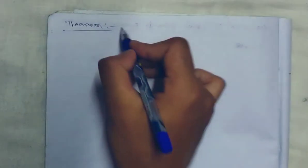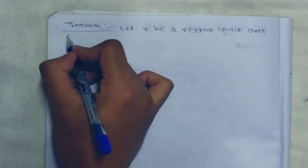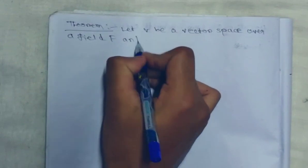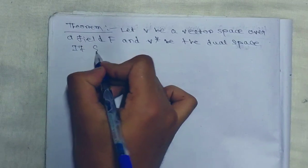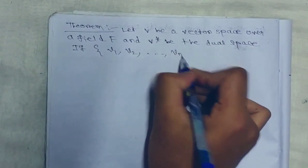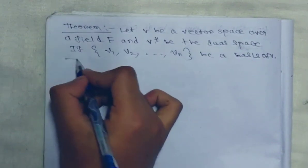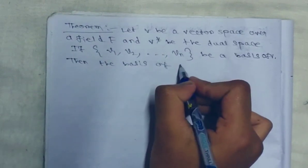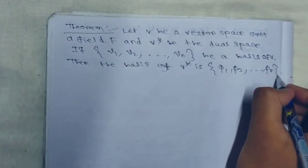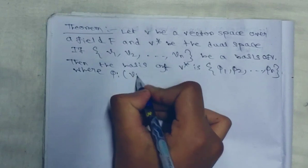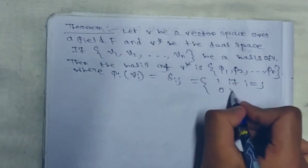Now a theorem regarding dual space. Let V be a vector space over a field F and V* be the dual space. If V1, V2, ..., Vn is a basis of V, then the basis of V* is φ1, φ2, ..., φn, where φi(Vj) = δij, which equals 1 if i equals j, and 0 if i does not equal j.